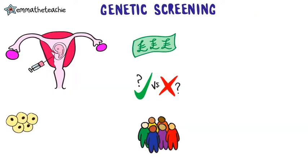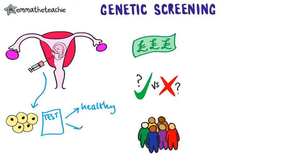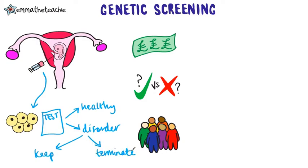Couples with a history of a genetic disorder in their family may be offered genetic screening. This is when cells from the embryos are taken and screened or tested for specific disorders. If the tests show that the embryo has a genetic disorder, the parents will make a decision whether or not to keep the baby, or whether to terminate the pregnancy. There are many complex issues with this. You need to be able to make judgements using information given, so don't worry too much about memorizing these.